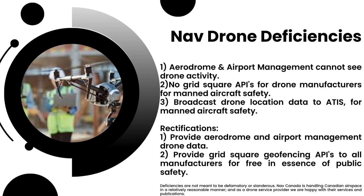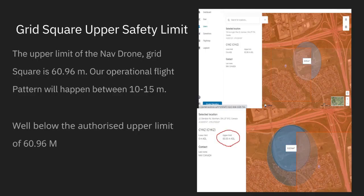Having grid square upper and lower safety limits hard-baked in with APIs or plugins to manufacturers will further assist with public safety, not only helping with air safety but also preventing potential crashes or collisions in the air. To reiterate, having grid square safety limits integrated via APIs to manufacturers will further assist with public safety. Thank you for watching.